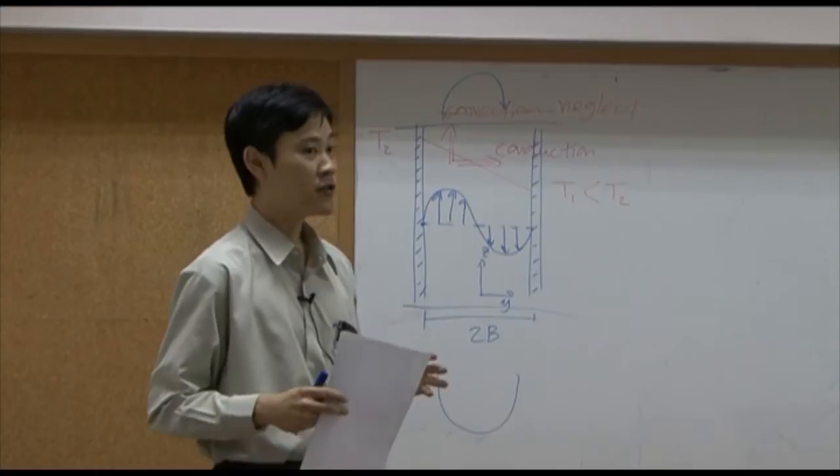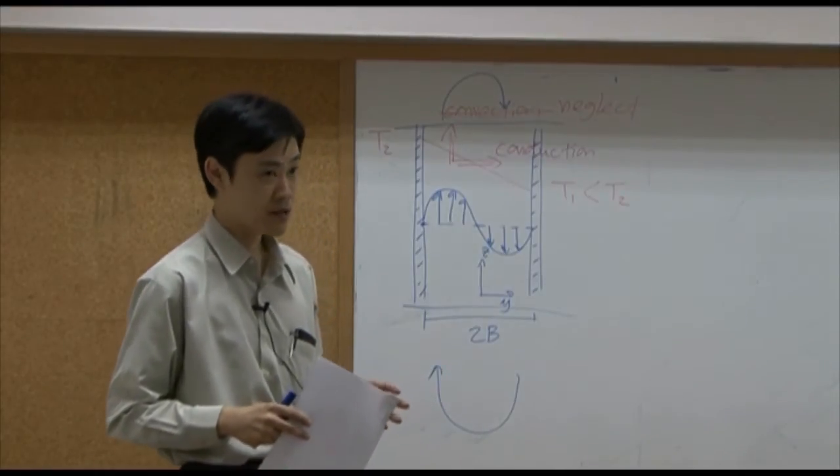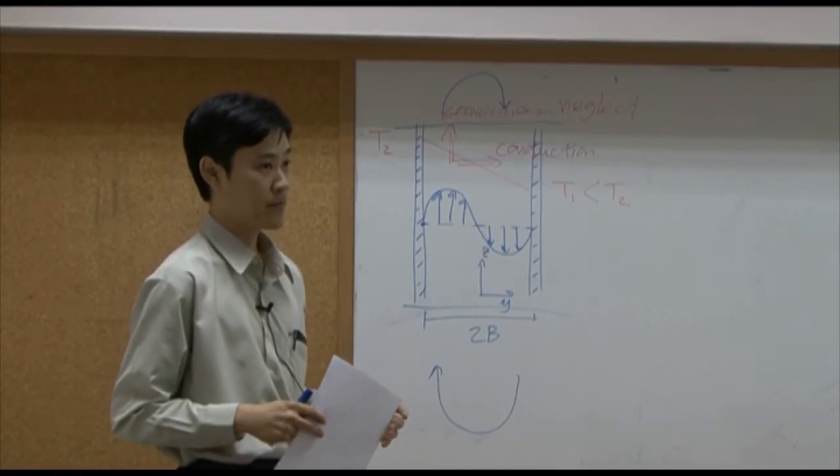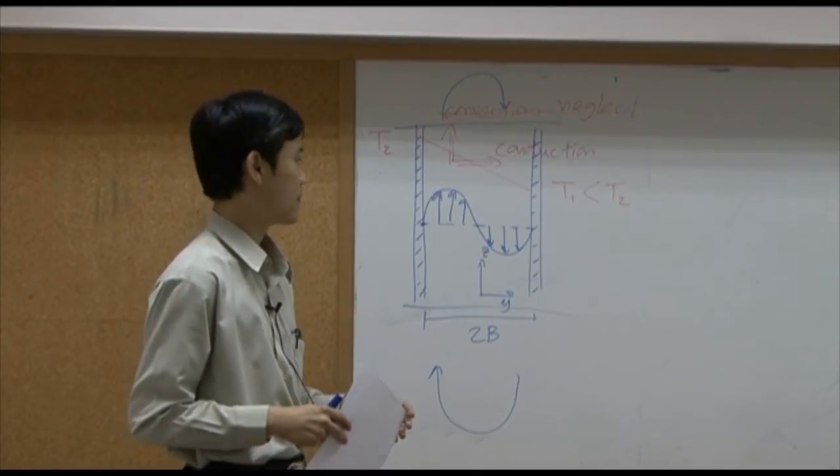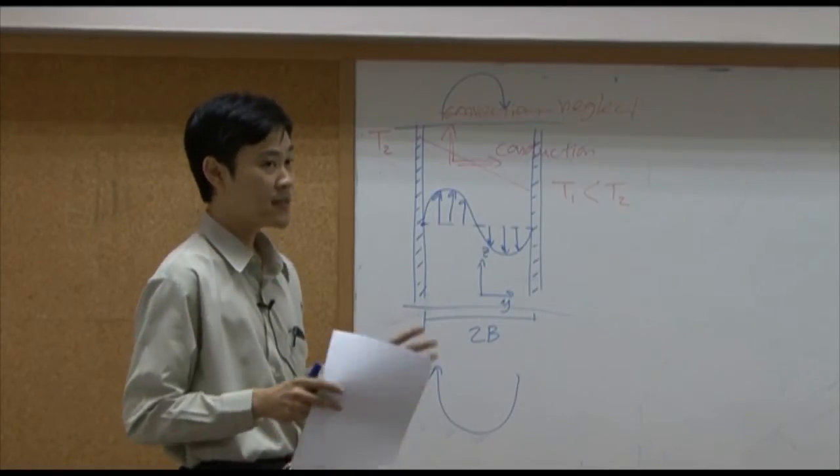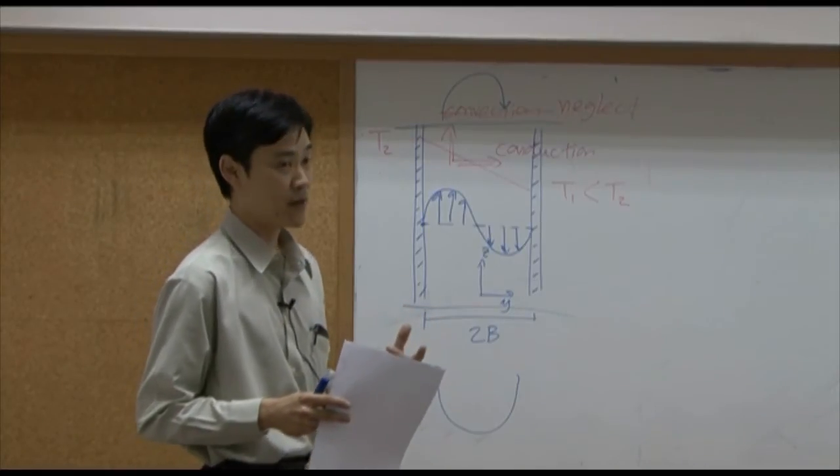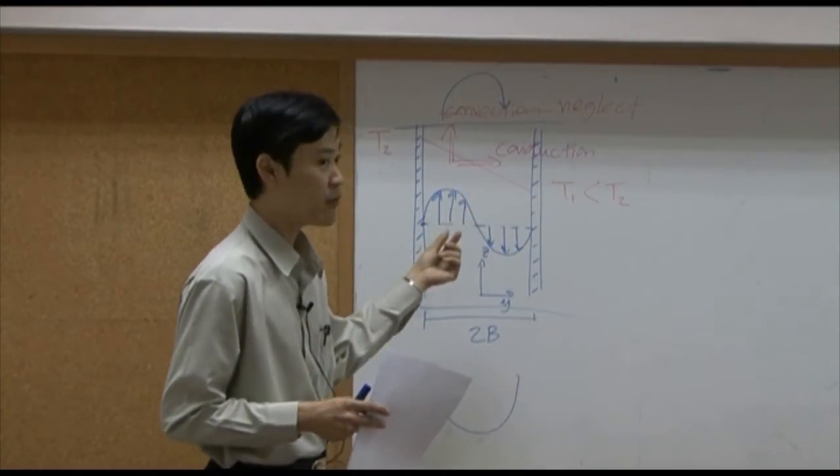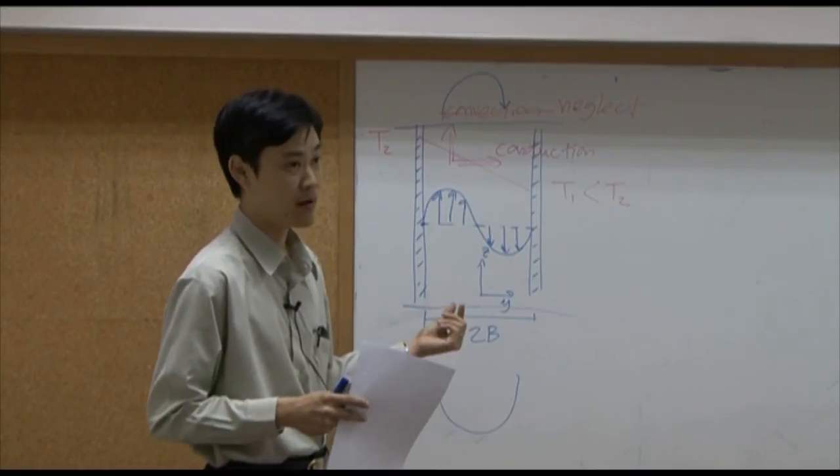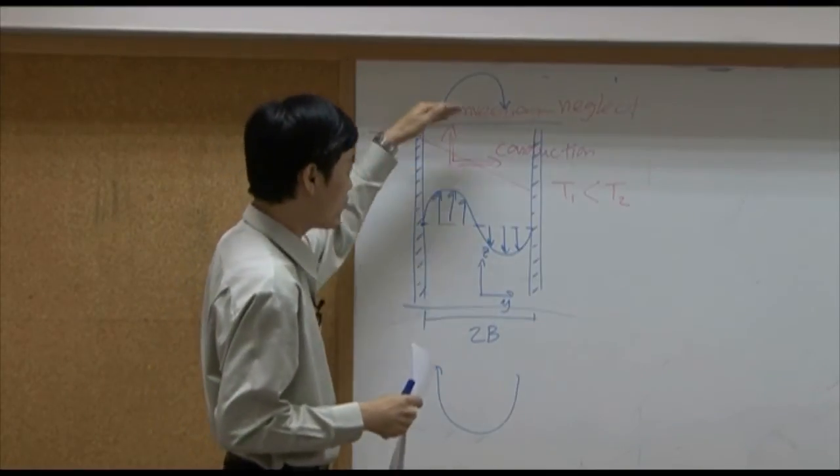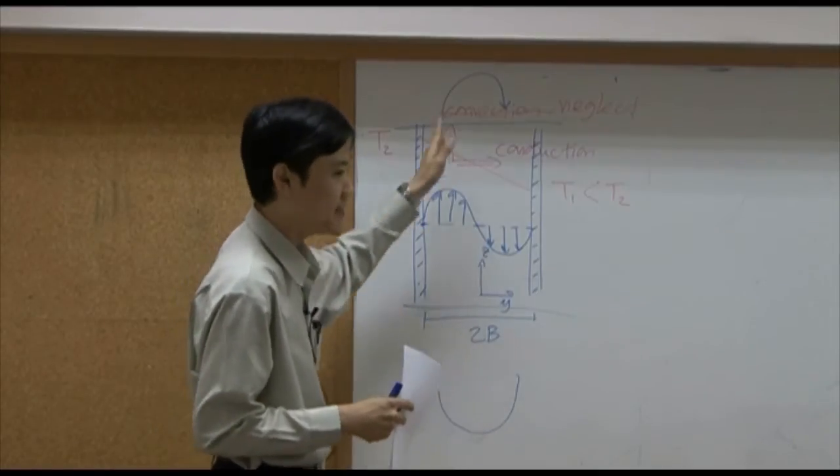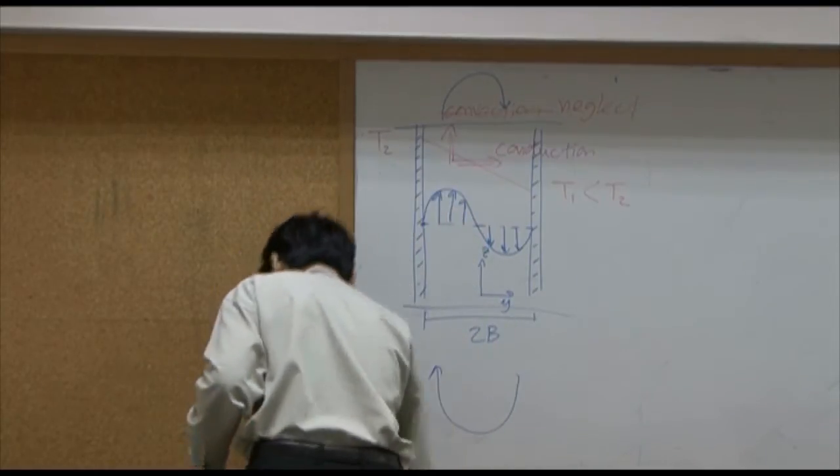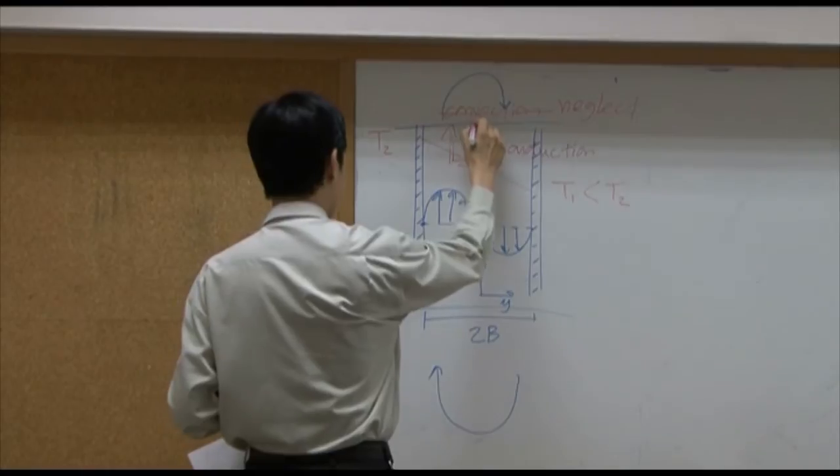Now, if I want to do shell balance for energy transport, what does my shell look like? Once again, you need to look for temperature difference. There will be temperature difference in Y direction. So therefore, shell in Y side is supposed to be delta Y. There will be no temperature difference in Z direction. So shell in Z side can be the full length. So my shell here should look something like this.